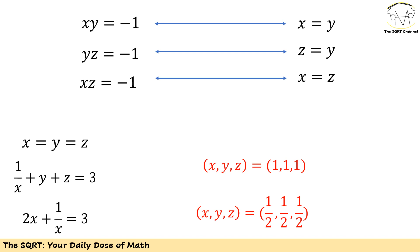Note that for the first two equations, either xy equals negative 1 or x equals y — one of these can be valid. On the other hand, one of the second row equations can be valid, and so on. I'm going to assume for now that x equals y and y equals z.